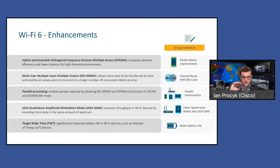At a high level, we move the PHY layer from a hub-based CSMA model to a model that is essentially time and frequency division. This is nothing new in general, but in Wi-Fi it is. We have the ability to transmit downstream and upstream to multiple clients at the same time in different frequency slots — different resource units — which is parallelism. And that helps us with the efficiency challenge.